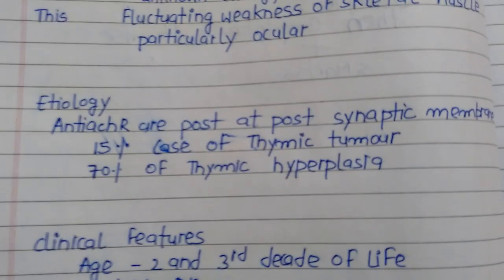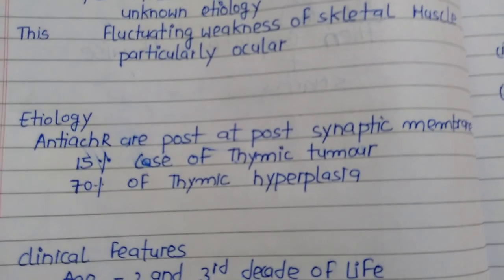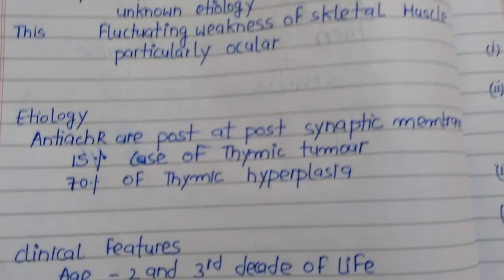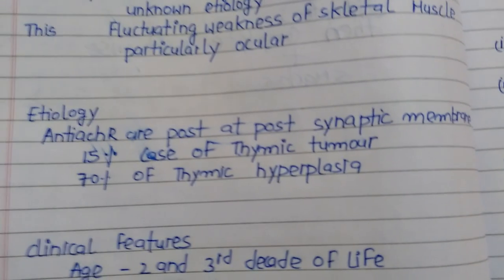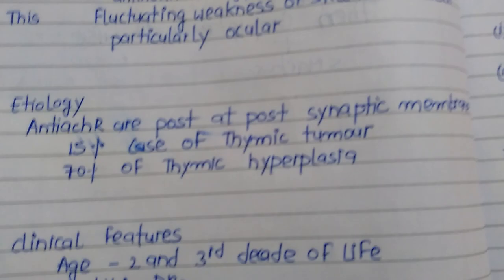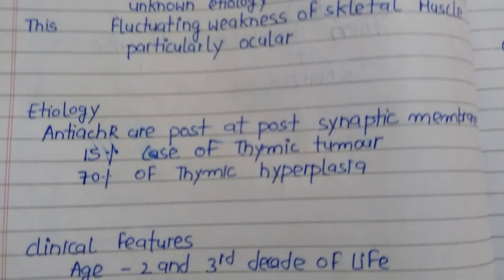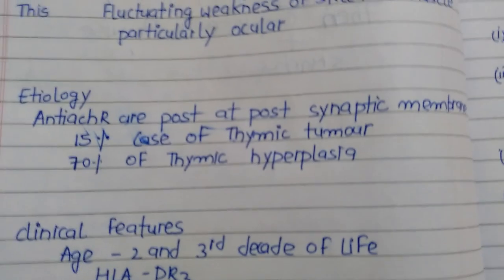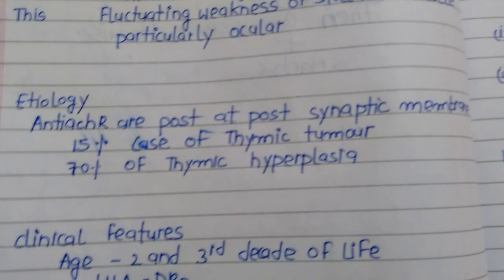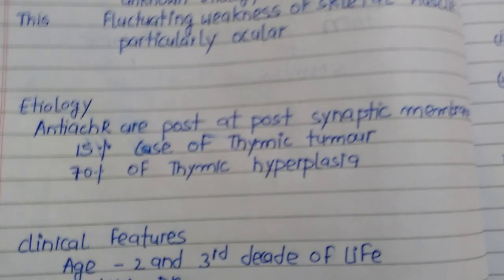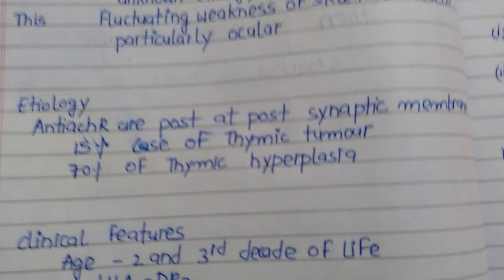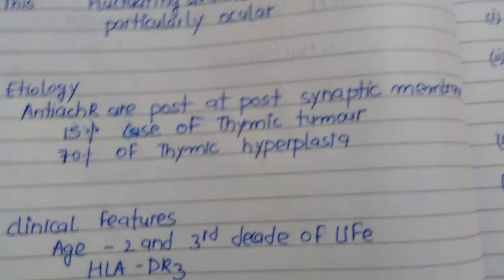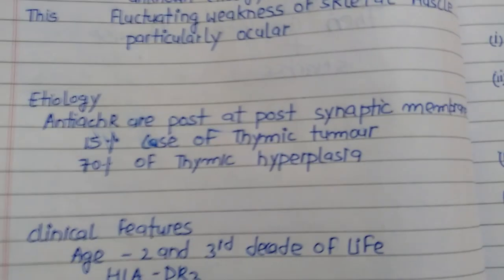Regarding etiology — autoimmune diseases like rheumatoid arthritis or SLE have no known exact cause. Similarly in Myasthenia Gravis, the exact cause is unknown. However, in 50% of cases, thymic changes are present — specifically thymic tumor in 15% and thymic hyperplasia in 70% of people.